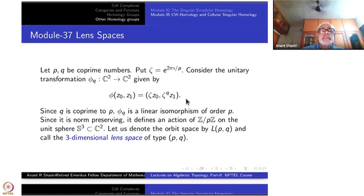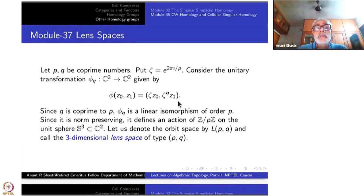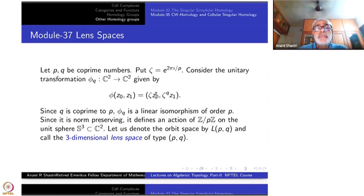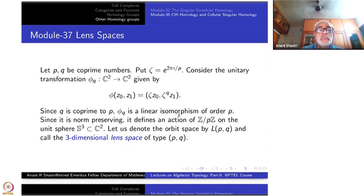Consider the transformation on C² given by (Z₀, Z₁) going to (ζZ₀, ζ^Q Z₁). This is a C-linear map from C² to C². It is norm-preserving because zeta is of modulus 1. These transformations are actually orthogonal.